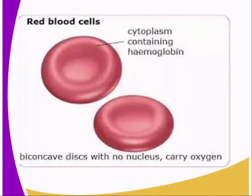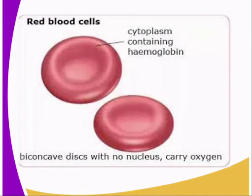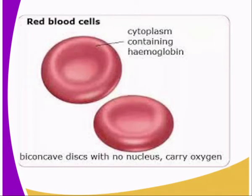Our second specialized animal cell is the red blood cell. As you can see, they contain cytoplasm which normally contains hemoglobin. Hemoglobin combines with oxygen to form oxyhemoglobin. Red blood cells form part of the cellular component of blood in animals. They are biconcave in shape, lack a nucleus, and contain hemoglobin. The reason they lack a nucleus is to provide a large surface area so that hemoglobin can be carried, enabling them to transport oxygen within the body.